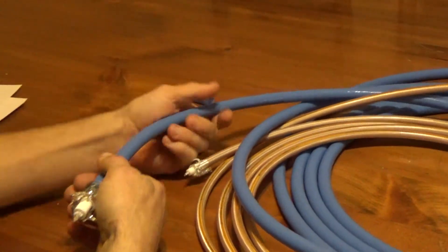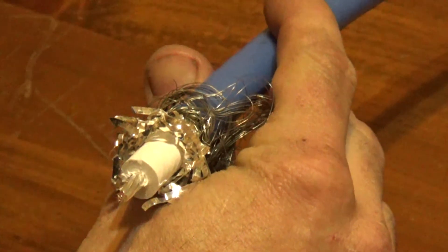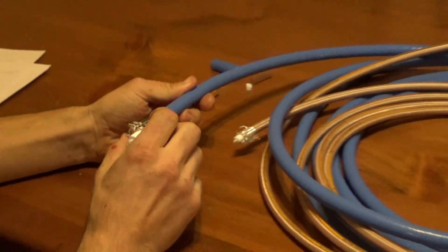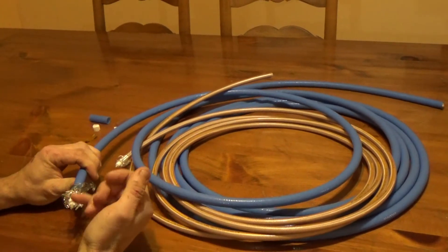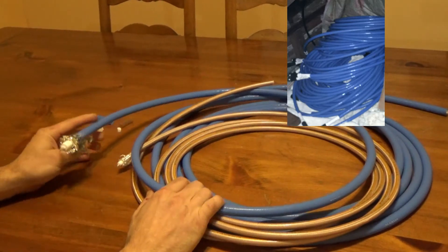The SFT600 takes the same connectors, the EZ-style connectors, the same connectors that the LMR600 coax takes. You can get LC connectors, you can get 716 DIN, whatever. Great stuff.